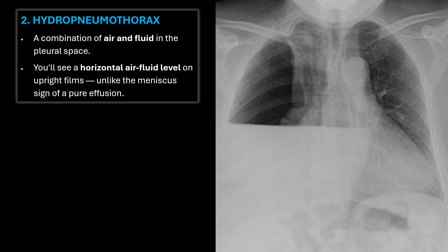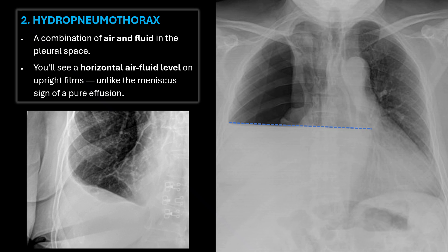Second is a hydropneumothorax, where you get the combination of air and fluid in the pleural space. You'll see a horizontal air-fluid level on upright films, unlike the meniscus sign of a pure effusion, as we see here on the left.